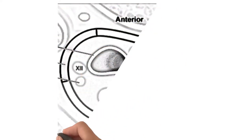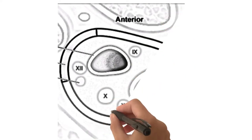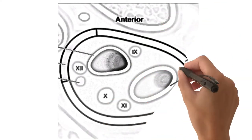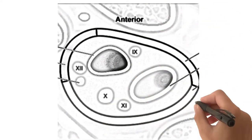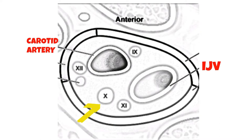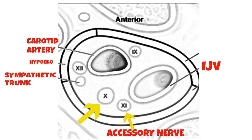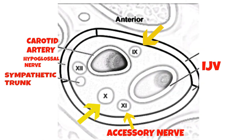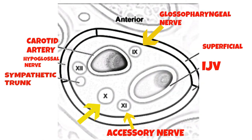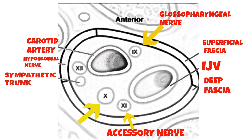The crottage sheath is basically a condensation of deep fascia in which are embedded the common and the internal crottage arteries, the internal jugular vein, and the vagus nerve. It also consists of the deep cervical group of lymph nodes forming a chain along the internal jugular vein, also embedded in the crottage sheath as well.